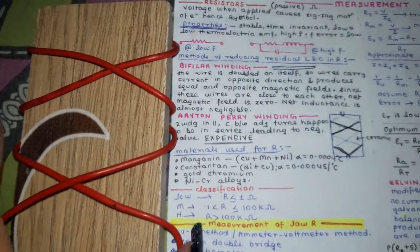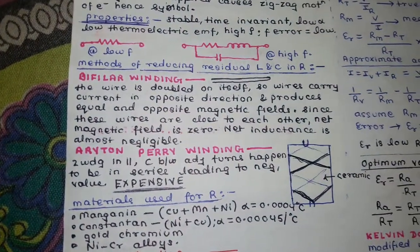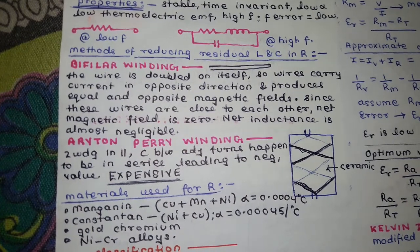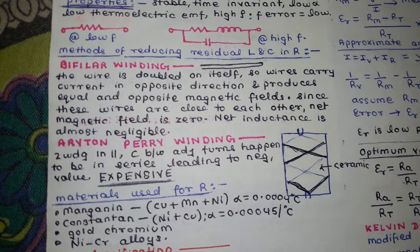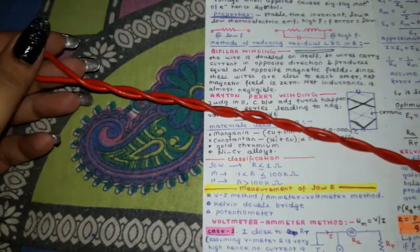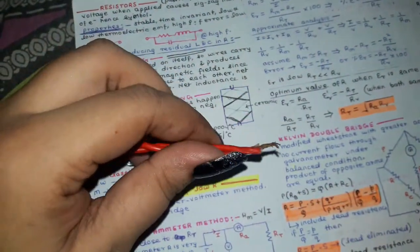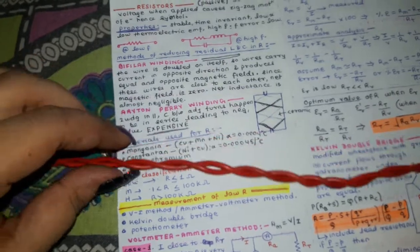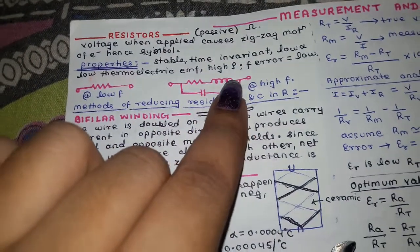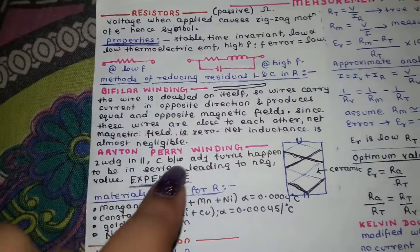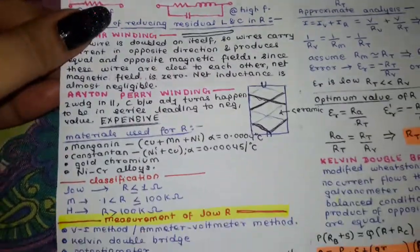In bifilar winding, the wire is doubled on itself so the two wires carry current in opposite directions, producing equal and opposite magnetic fields. Since these wires are close to each other, the net magnetic field is zero and net inductance is almost negligible. The wire is not cut — it is a single wire doubled back, reducing the unwanted inductive effect at higher frequencies. Bifilar method reduces inductance; Ayrton-Perry winding reduces capacitance.